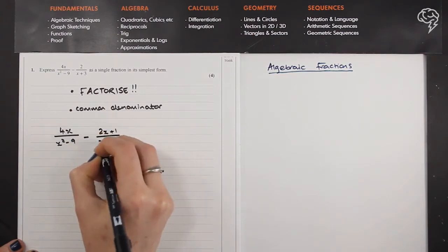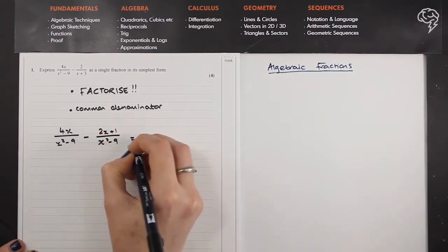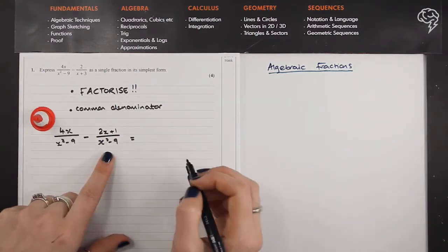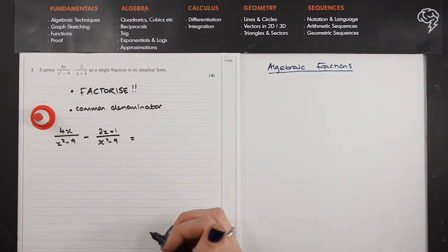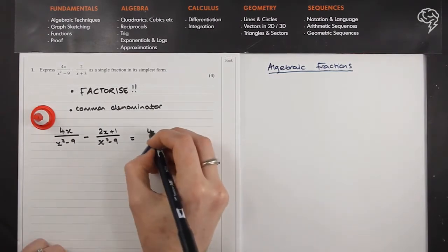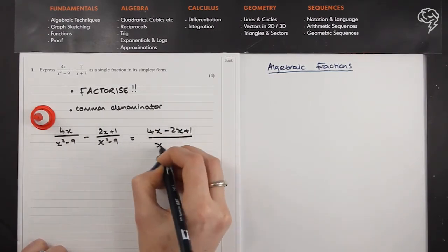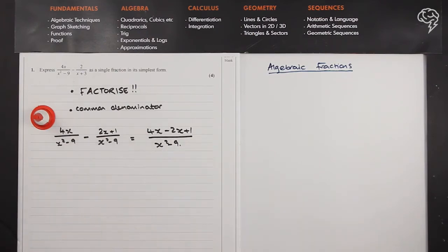2x plus 1 over x squared minus 9. I'm just going to put this cone on to remind you that what I'm about to write is not true, but it's a very common mistake to then write 4x minus 2x plus 1 all over x squared minus 9. That's the very common mistake.